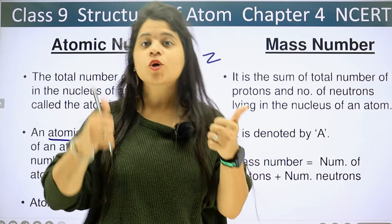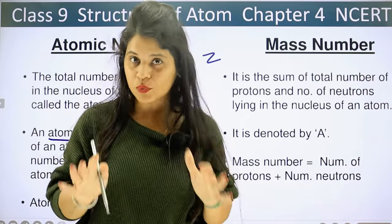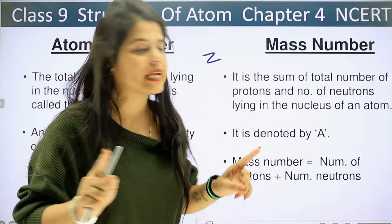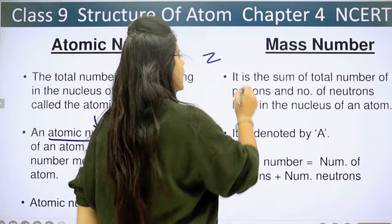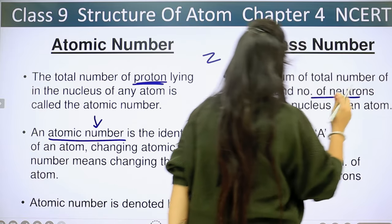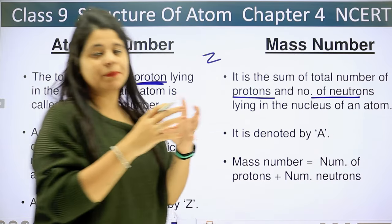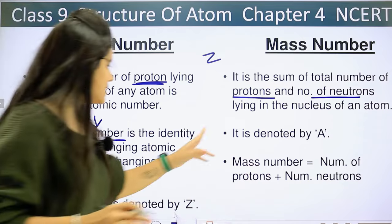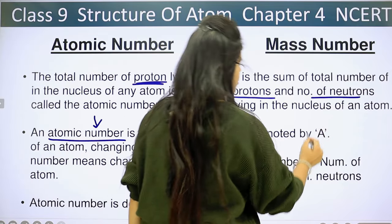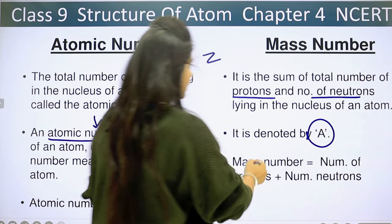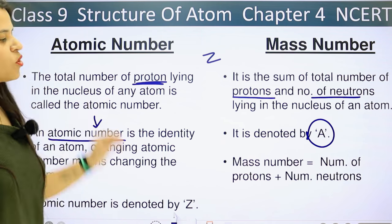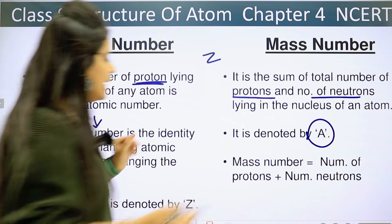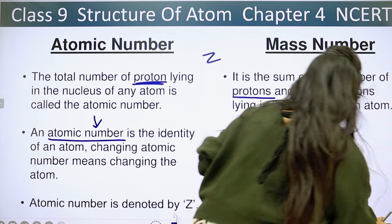We know that the number of electrons and protons are equal. But neutrons and protons being equal is not given. So when we do the total number of protons and neutrons, we get the mass number. It is denoted by A. You can write mass number equals to number of protons plus number of neutrons.